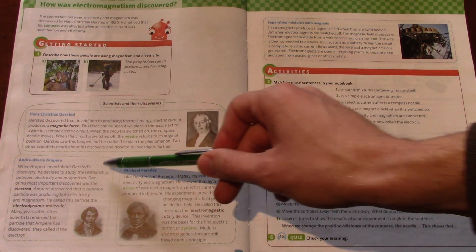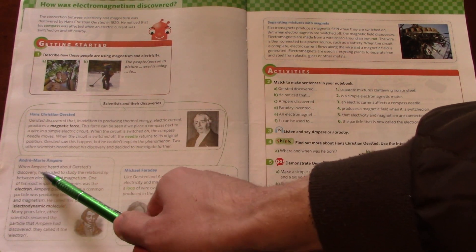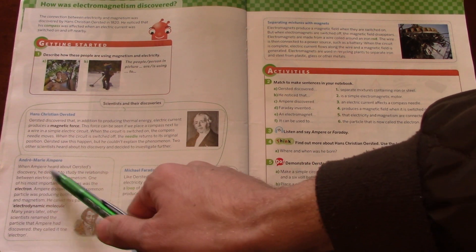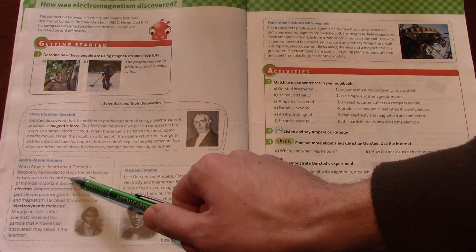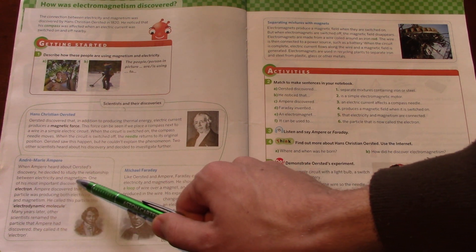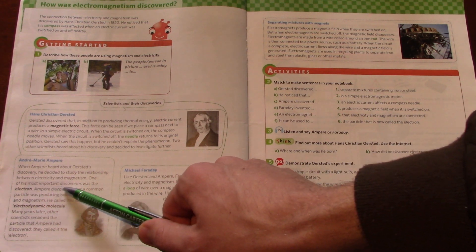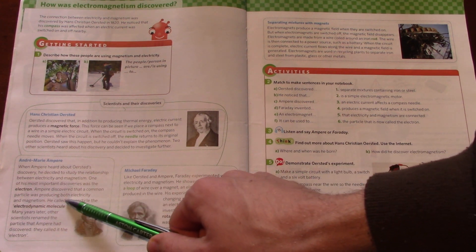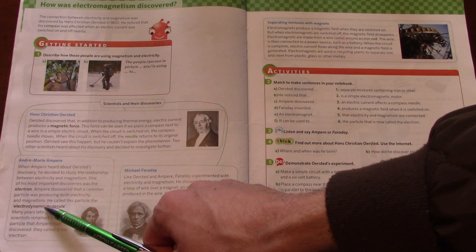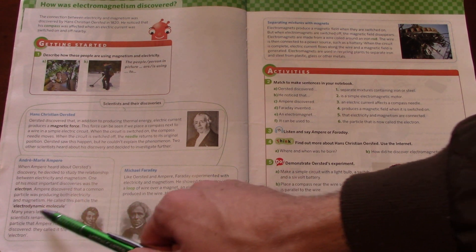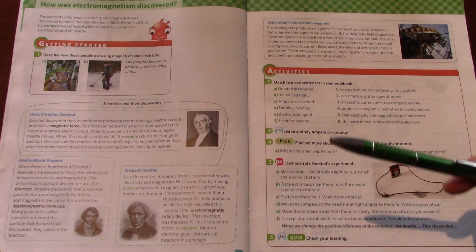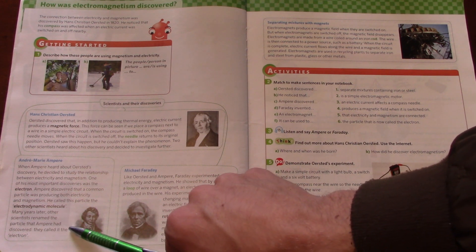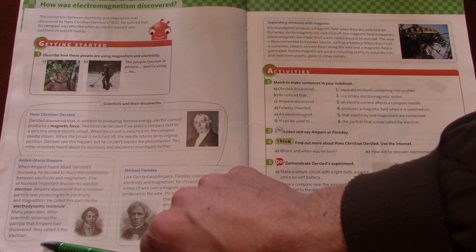So these are the two other scientists. André-Marie Ampère. When Ampère heard about Ørsted's discovery, he decided to study the relationship between electricity and magnetism. One of his most important discoveries was the electron. Ampere discovered that a common particle was producing both electricity and magnetism. He called this particle the Electrodynamic Molecule. Many years later, other scientists renamed the particle that Ampere had discovered. They called it the electron.